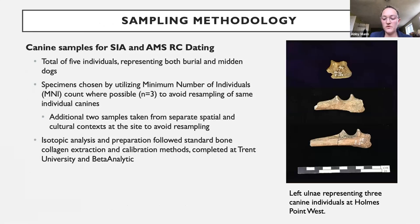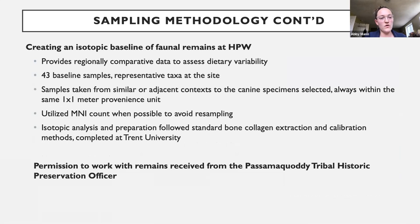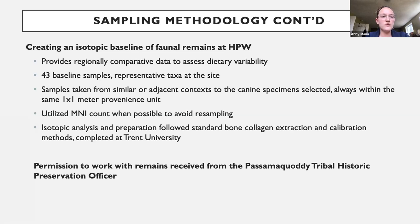My sampling methodology incorporated five individual dogs, identified by minimum number of individuals to avoid resampling. Three were separated by MNI; the final two samples were taken from different cultural contexts. These followed standard bone collagen extraction and calibration methods completed at Trent University and Beta Analytic. The same was true for the baseline environmental sample, for which 43 samples were taken using the same standards. All work with remains was done with permission from the Passamaquoddy Tribal Historic Preservation Officer, in conjunction with the collaborative effort at this site.